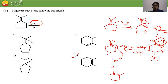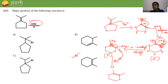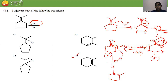Ring expansion from 5-membered to 6-membered ring occurs for stability. The secondary carbocation then undergoes a 1,2-methyl shift to form a tertiary carbocation. Finally, elimination gives the alkene product in option D.